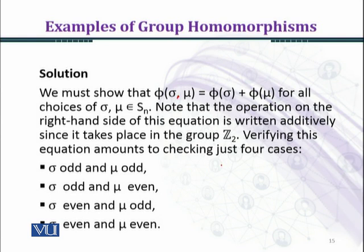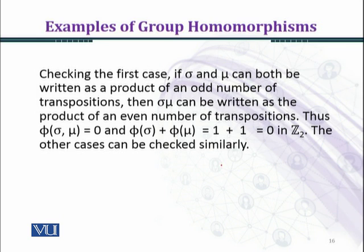Let's start with case 1, and the remaining cases you can solve the same pattern. Here I am going to establish case 1. Checking the first case, if sigma and mu can both be written as a product of an odd number of transpositions.